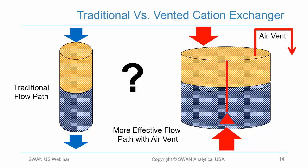On the right is a vented cation exchanger. You see the sample flow in and go through the resin — on the left, the traditional column — then it flows to the conductivity cell for cation conductivity. In the design on the right, the sample comes in, flows down, and then flows up through a little funnel and out past the cation conductivity sensor, but most importantly it has an air vent to allow air accumulated in the cation exchanger — entrained in the sample particularly during startup — to be expelled, thereby greatly reducing its impact on the cation conductivity.